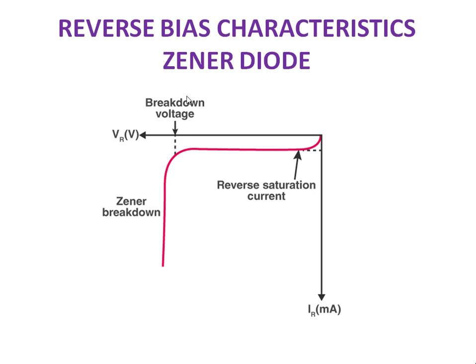VZ is nothing but the breakdown voltage. At VZ, Zener breakdown occurs because of a high electric field, and the depletion layer will be vanished. Because of that absence of the depletion layer, there will be a large amount of current flowing through the Zener diode. It may damage your device, so we have connected a series resistor with the Zener diode.